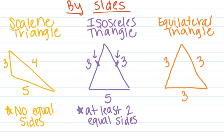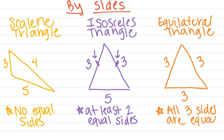Our last type of triangle classification by sides is an equilateral triangle. That means all three sides of your triangle are equal. You can see that all three sides are marked three, three, three. We could also put those little tick marks, and if each side has a tick mark, that means all three sides are equivalent, or congruent, as we say in geometry.